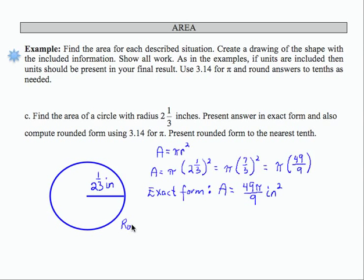Now to find the rounded form, what I'm going to do is take that same exact form and substitute 3.14 for pi. So if I do that, it's going to look something like this, 49 times 3.14 over 9. That's going to be inches squared.